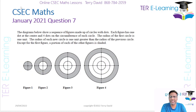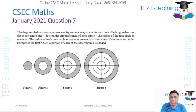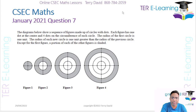Question 7 here is the investigation question. We have a pattern: the diagrams below show a sequence of figures made up of circles and dots. Each figure has one dot at the center and four dots on the circumference of each circle. The radius of the first circle is one unit, and each new circle's radius is one unit greater than the previous. Except for the first figure, a portion of each of the other figures is shaded.